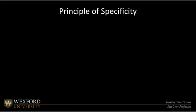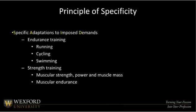The principle of specificity is also related to the SAID principle — specific adaptations to imposed demands. What we're saying here is that if we have an endurance training athlete, we're going to be doing endurance-type training modes with that athlete to specifically target and progress or overload what their body can do. We're looking at variables that would influence how they run, cycle, or swim to impact their endurance. For strength training, we'd look at variables related to muscular strength, power, muscle mass, and ways to measure muscular endurance.